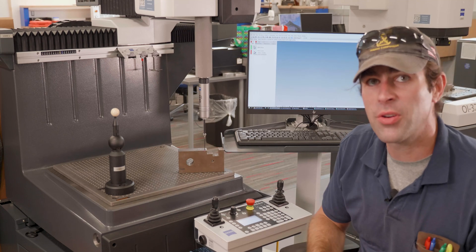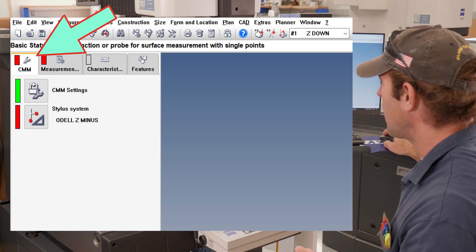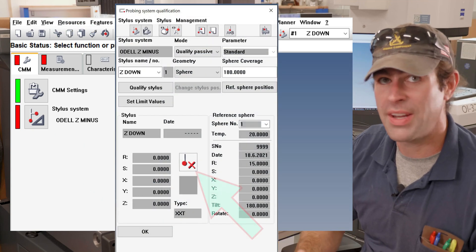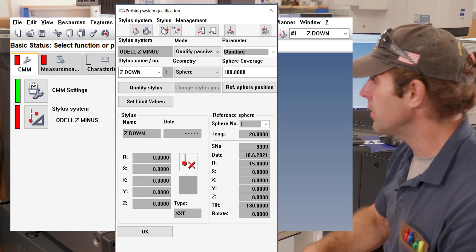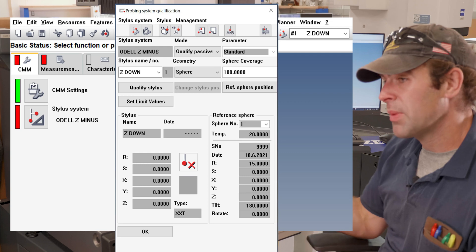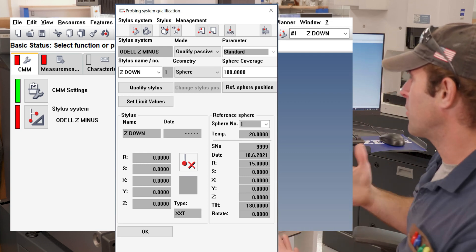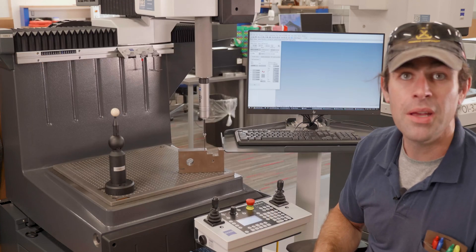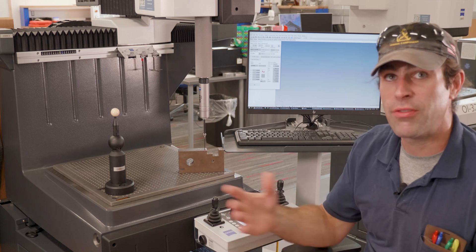So now, just like we did with the master probe, we're going to go to that CMM tab. We're going to select stylus system, and if you'll notice there's a big X right next to that little icon of the stylus. You'll also notice that there's no information about the stylus. There's letters—R, S, X, Y, and Z—zero information. The computer knows nothing about it, which is perfectly fine. That's why we did the thing with the master probe and the reference sphere.